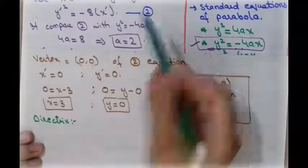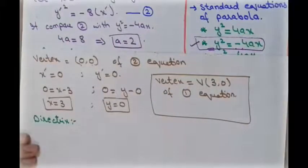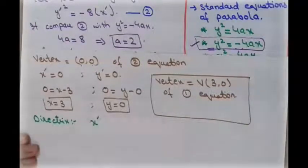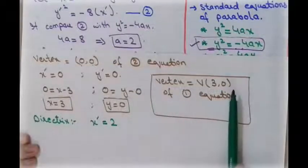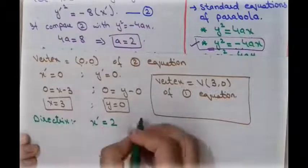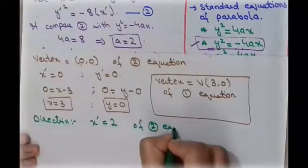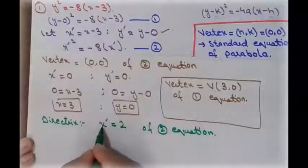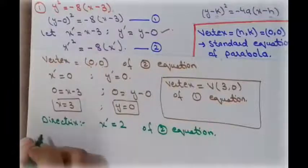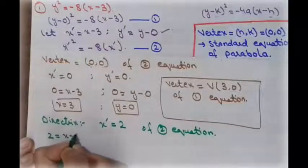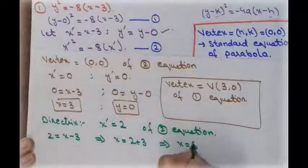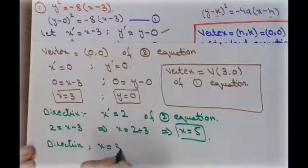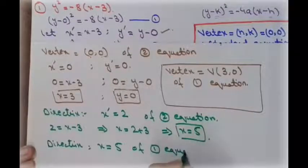The directrix of the second equation is x′ = +2, because the parabola opens to the left so the directrix is on the positive side of the x-axis. To find the directrix of the first equation, substitute x′ = 2: so 2 = x − 3, giving x = 5. The directrix of the first equation is x = 5.